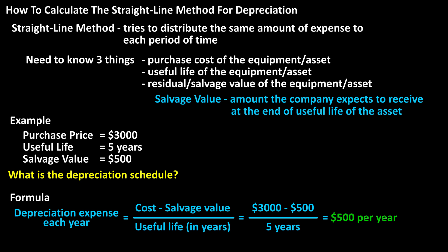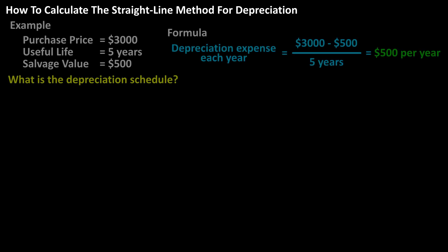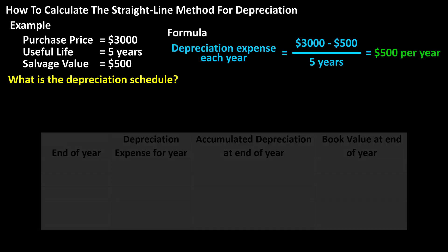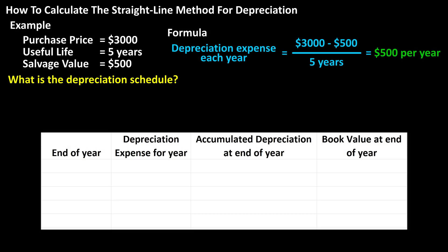Now we can create a depreciation schedule. We're going to put four columns in it: end of year, depreciation expense for year, accumulated depreciation at end of year, and the book value at end of year.